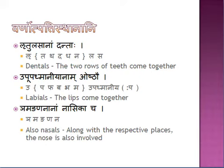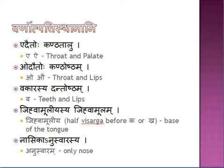E and I are produced with both kantha and talu. Okara and avkara are produced with kantha and oshtha — the lips and the throat. For vakara, the teeth touch the lips — so V is a dantoshtha letter. Jihvamuliya is the half visarga followed by K or Kh — the 'akk' sound produced from the base of the tongue. The anuswara is a pure nasal sound which does not require any particular part of the mouth.